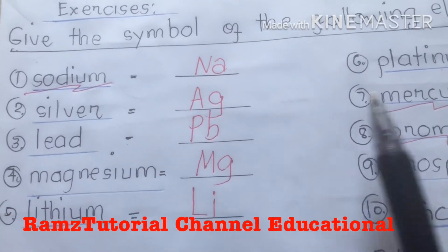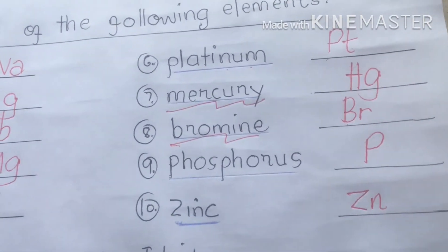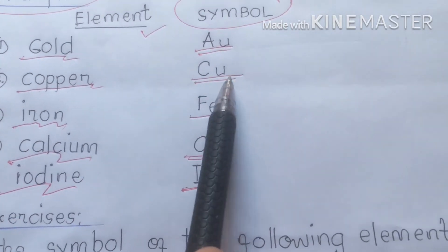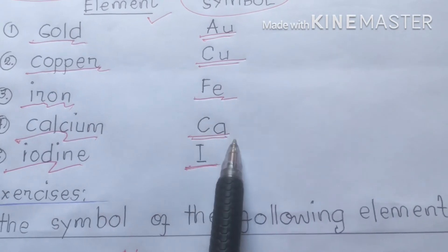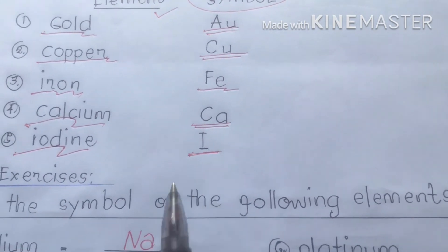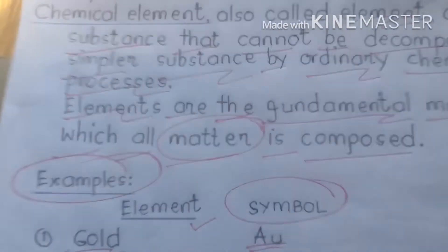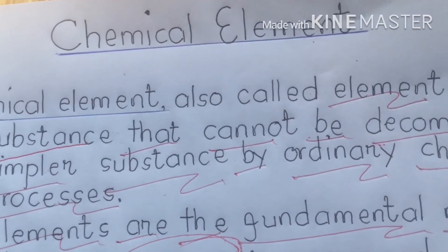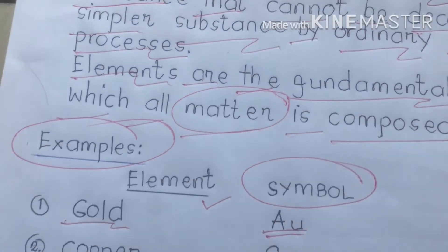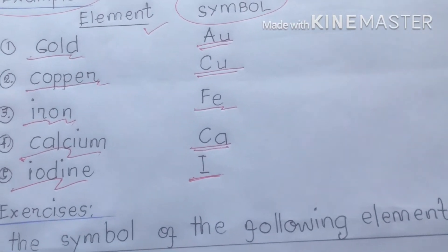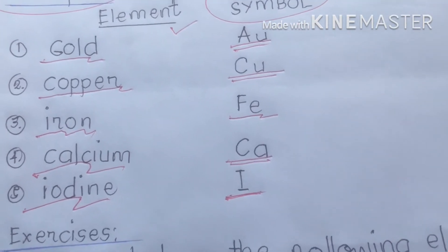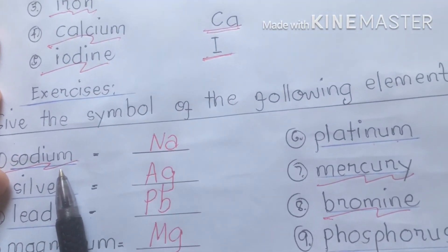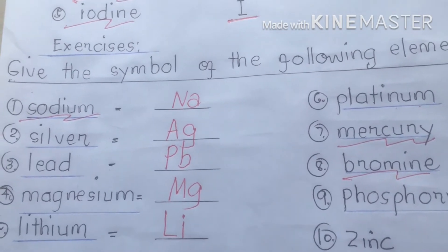These are the following elements and symbols. For gold, we have Au; copper, Cu; iron, Fe; calcium, Ca; iodine, I. In studying chemical elements, you can also combine different elements. For example, sodium can combine with chlorine — sodium plus chlorine gives you sodium chloride.